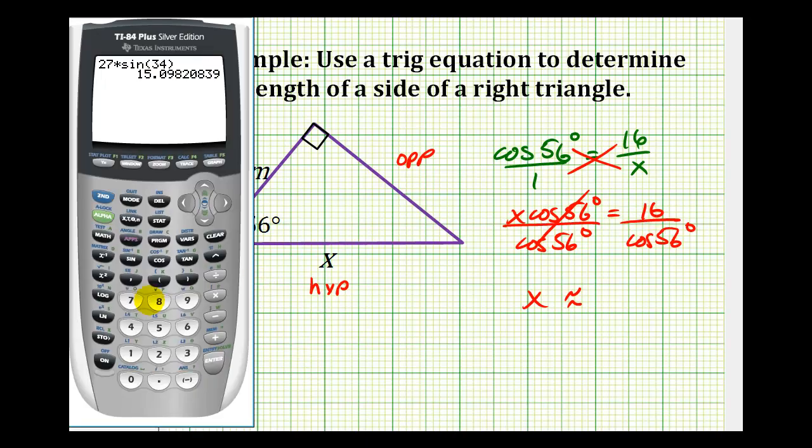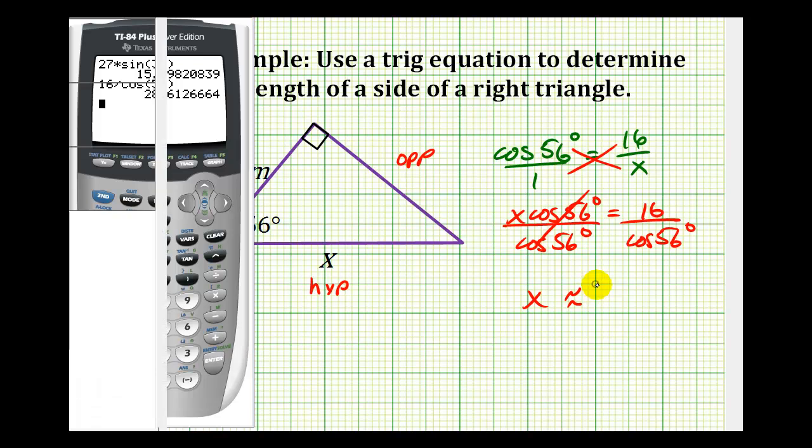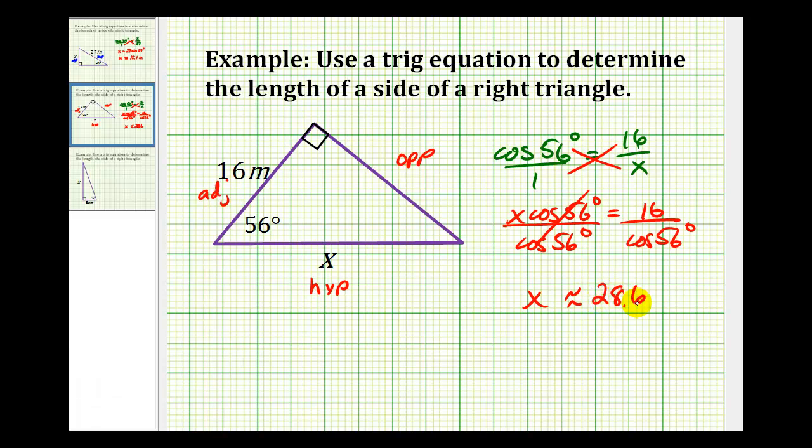Let's go back to the calculator. We have 16 divided by cosine 56 degrees. For this problem, x is approximately 28.6 meters.